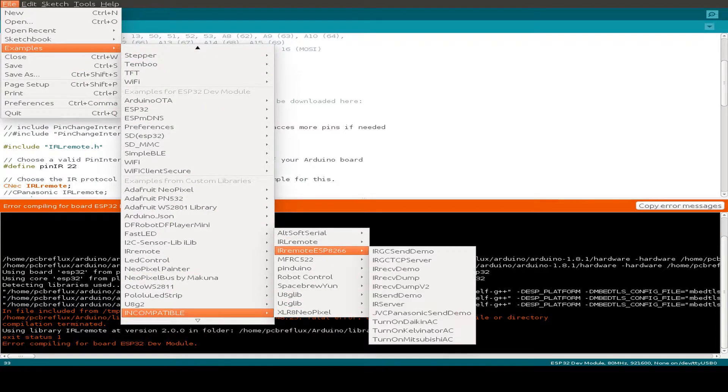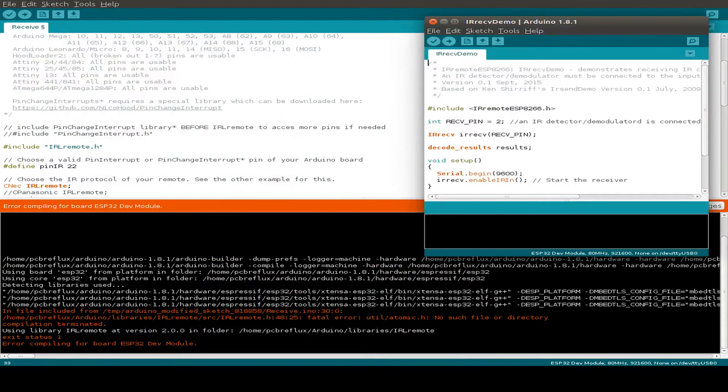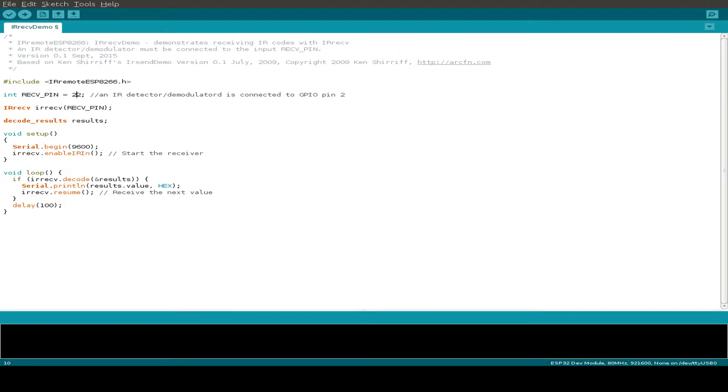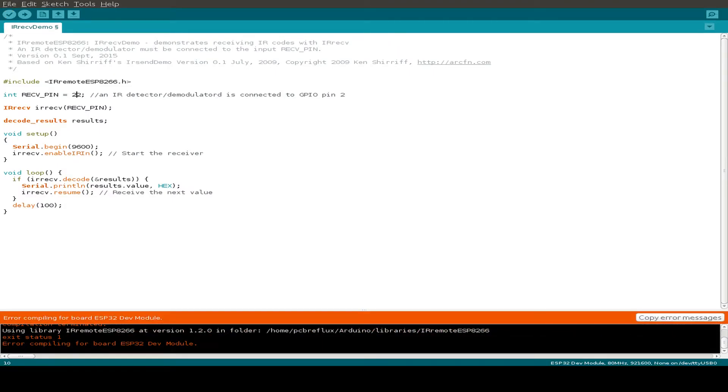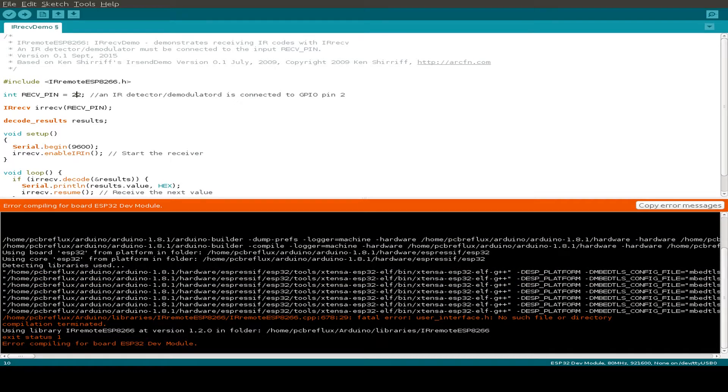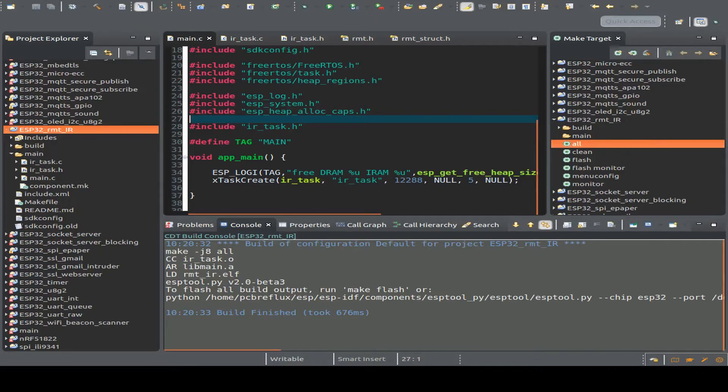We can do another example, maybe this IR remote for the ESP8266. Just do the IR received demo again and switch the GPIO pin and try to compile this. But there's also an issue with this. So we can analyze the library, or I'm just too lazy for this, so I switch to a library from Neil Colbin.